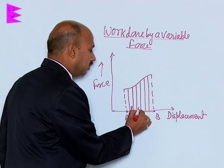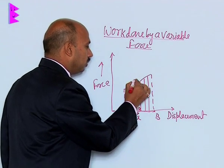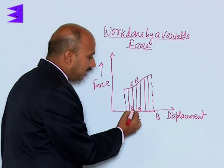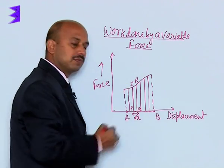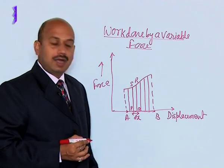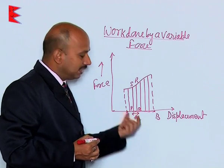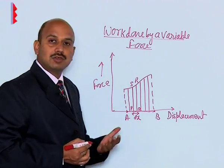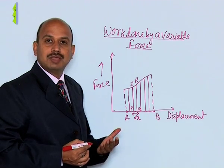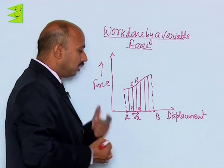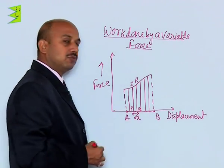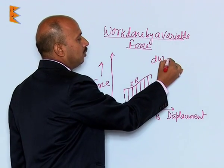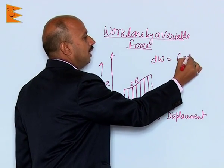This point is P, this is Q, this is R, and this is S. We take this small division, and for the dx displacement we assume the magnitude and direction of the force remains constant. Then the work done for the small displacement dx is given by dW = F·dx.